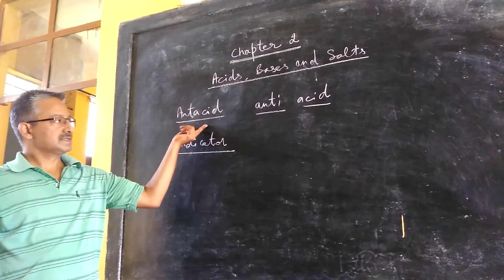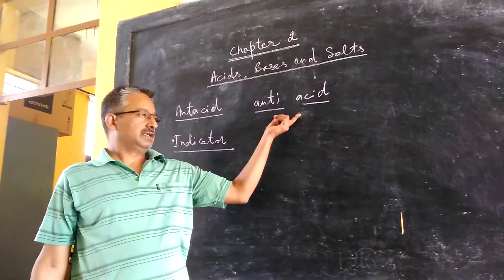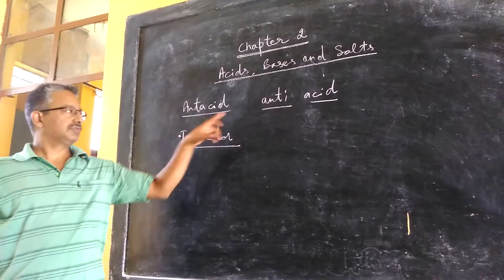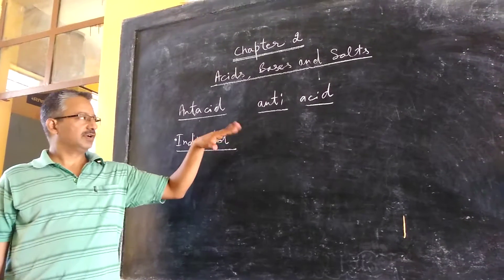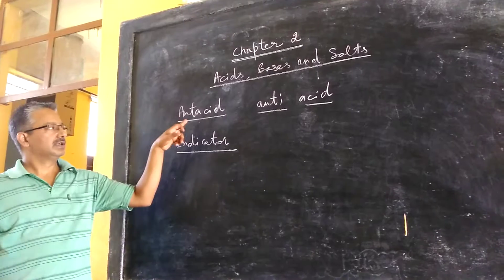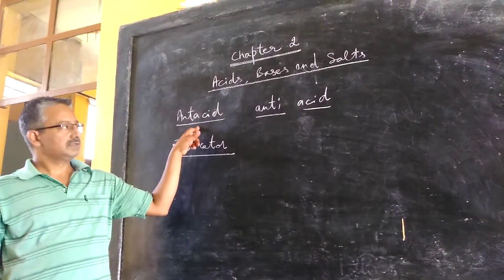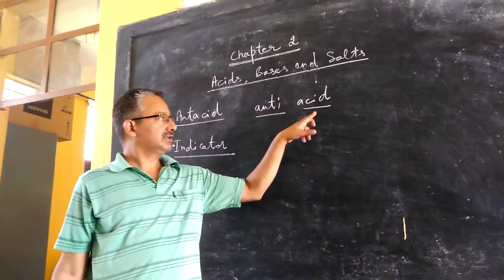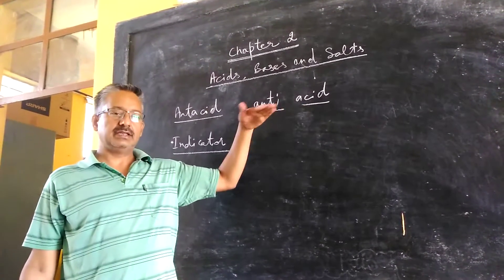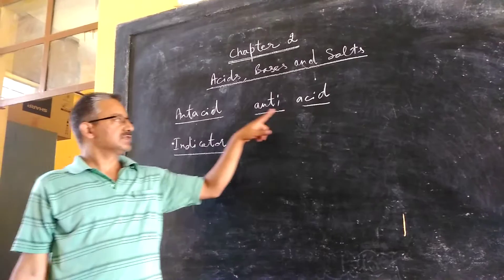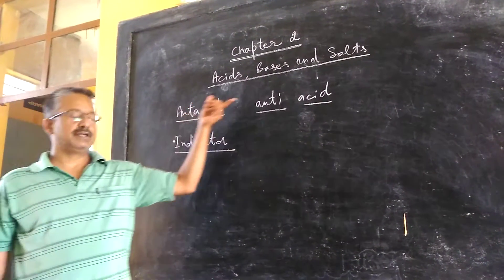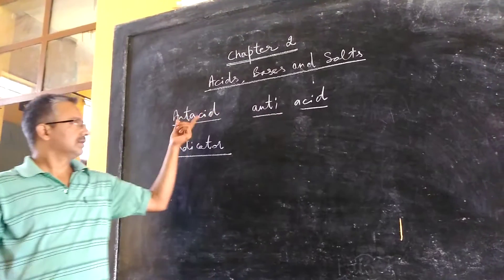So what are antacids? In case there is acidity in the stomach of some individual because of overeating or any other reason, then he needs to take antacid. Antacid when taken will act properly and that will maintain the pH level of the stomach. So such substances which are useful in acidity, they are termed as antacids.